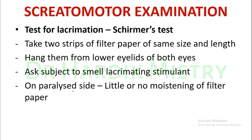On the paralyzed side, there will be little or no moisturizing of the filter paper. That is the Schirmer's test: hang filter paper strips from the lower eyelids of both eyes, ask the subject to smell a lacrimating stimulant to stimulate lacrimation, and compare the moistening on each side. On the paralyzed side, there will be little or no moistening.